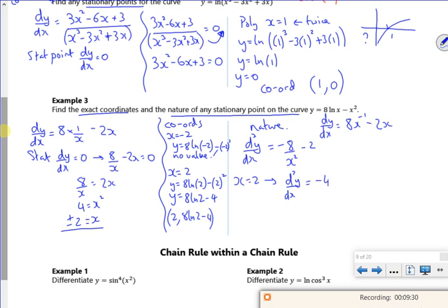So d2y by dx squared less than 0. Therefore max at x is 2. Boom. There you go. Finish that.